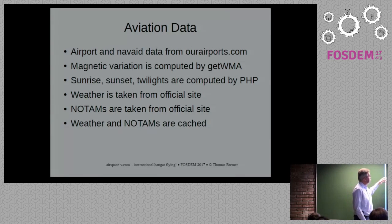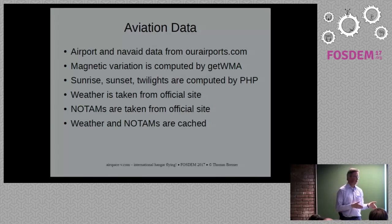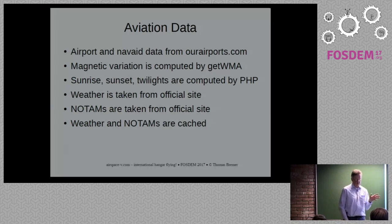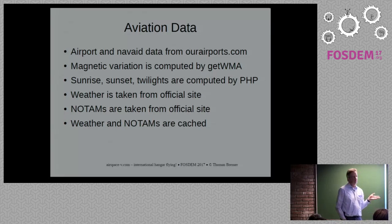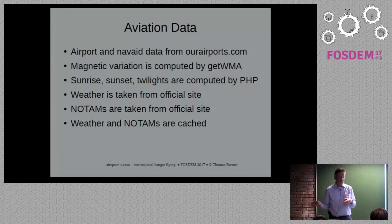Airport and nav aid data currently comes from ourairports.com. Magnetic variation is computed using the WMM formula, a JavaScript program published by NOAA to compute the strength and orientation of the magnetic field at any point on Earth — this matters in the US where you can get deviations of several degrees. Sunrise, sunset, and twilight routines are already included in PHP, and weather and NOTAM information is fetched from external websites and cached to keep load low.